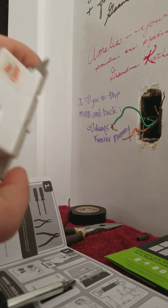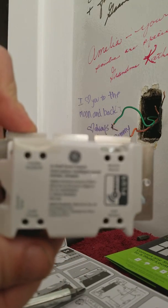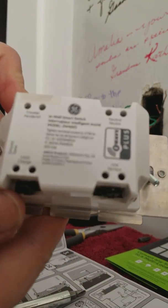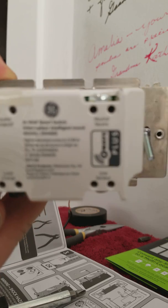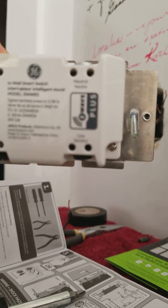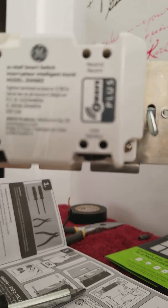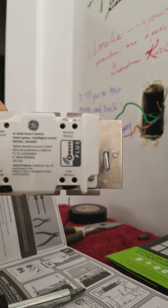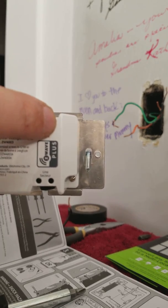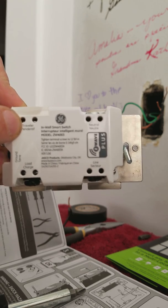Then what we are going to do is on the back here you will notice that it has different labels. If we can focus on this here, it's a little bit difficult to focus just because it is a shiny surface. But basically over here is neutral and then you have a traveler for a three-way switch.